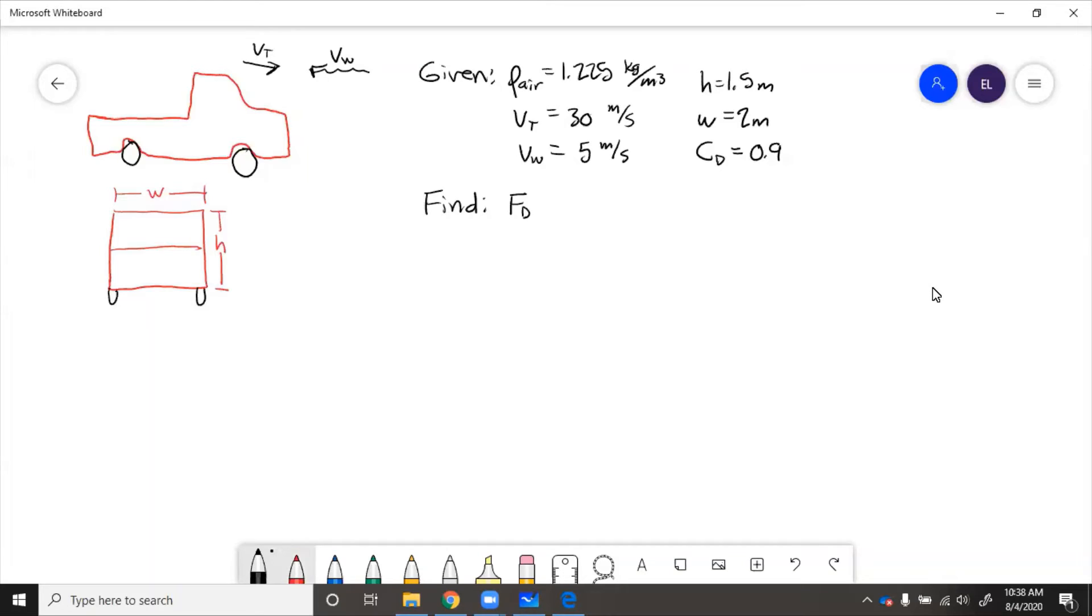Well we know drag force formula Fd equals 1/2 times cd rho v squared a. So if we plug things in, 1/2 times 0.9 times 1.225.